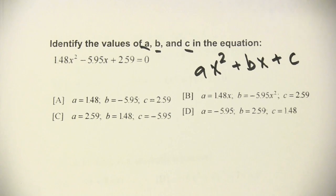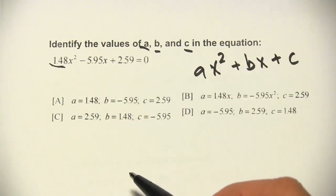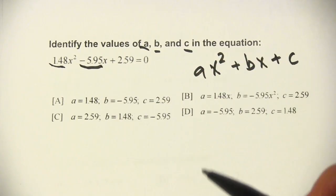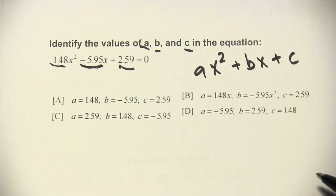That's just a convention, something that mathematicians agree to do. In this case, a is 148, b—be careful here, you want to include the negative sign—is negative 5.95, and c is 2.59.